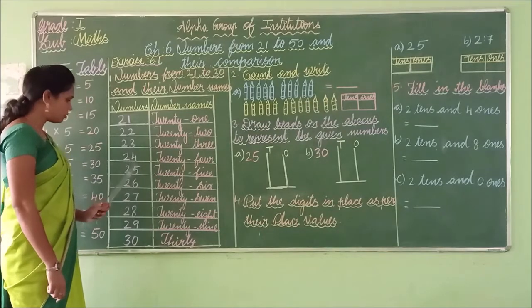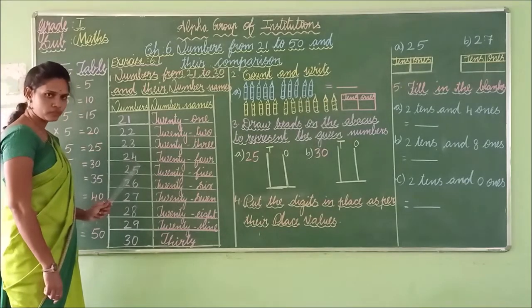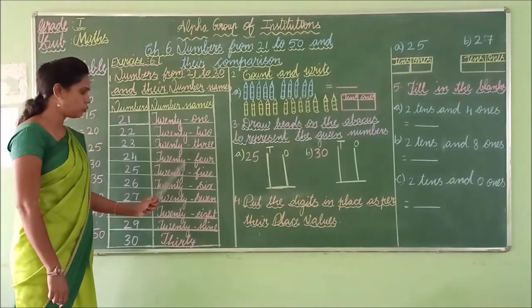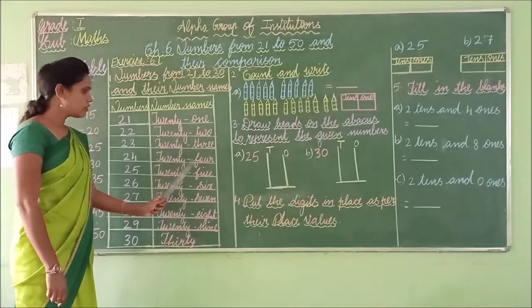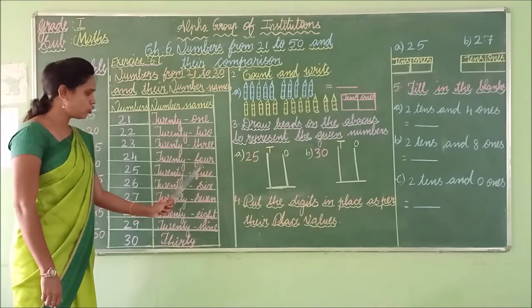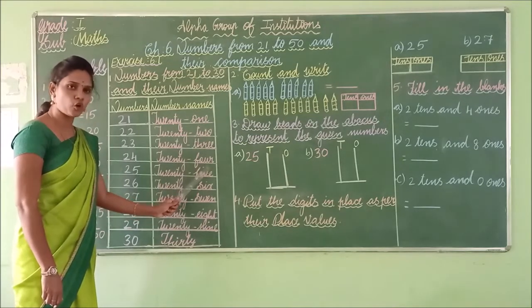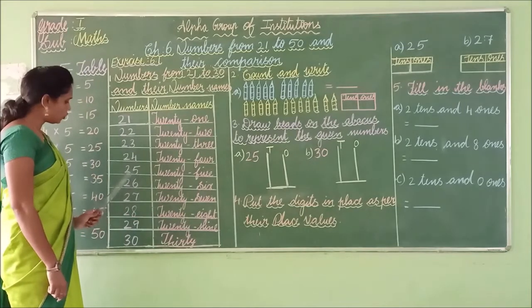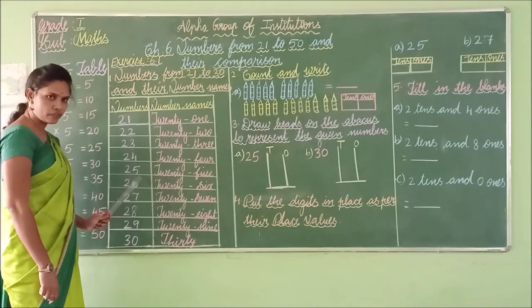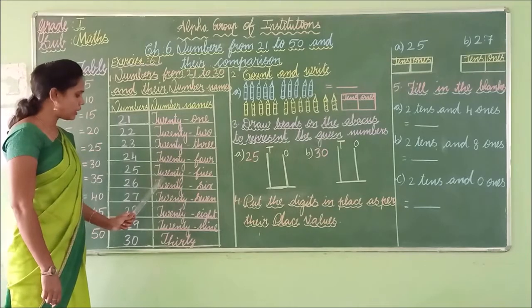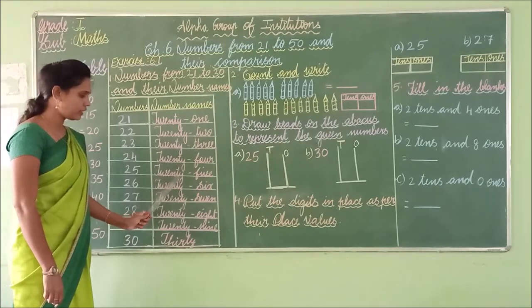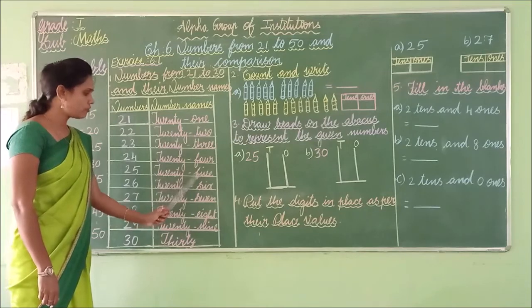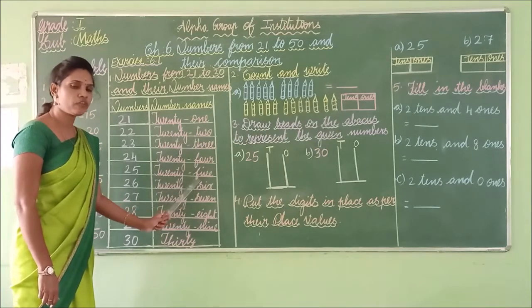24 — the number name is T-W-E-N-T-Y F-O-U-R. 24. 25 — the number name is T-W-E-N-T-Y F-I-V-E. 25.